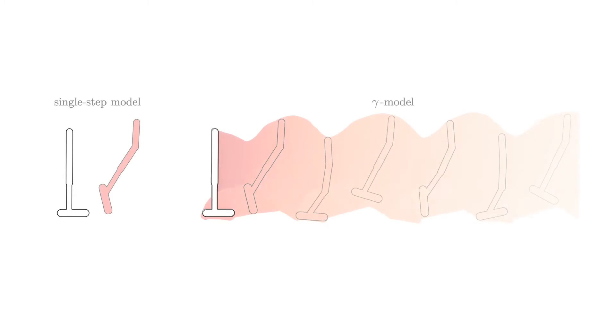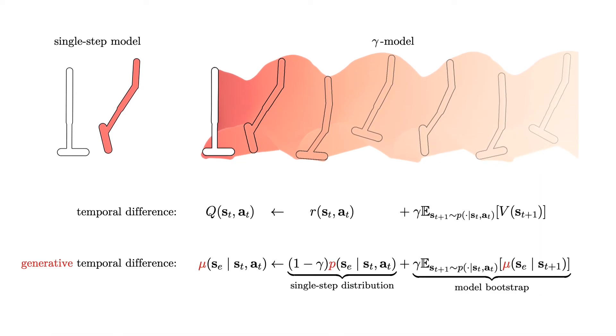What if we could train a model to directly predict the long-horizon information we care about without the need for rollouts? We accomplish this by reinterpreting temporal difference learning as a method for training generative models of environment dynamics.